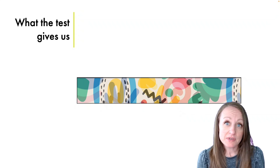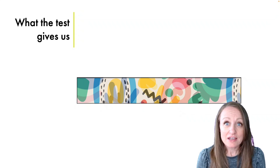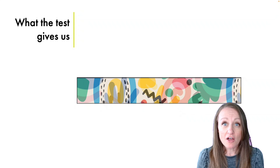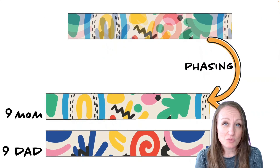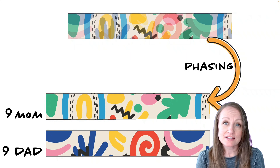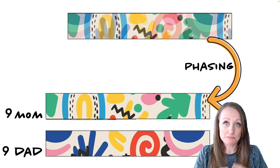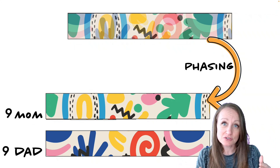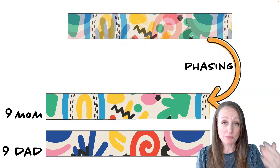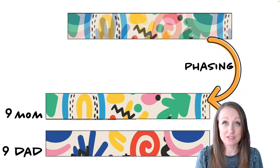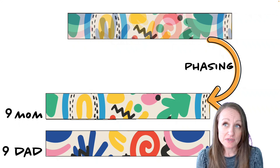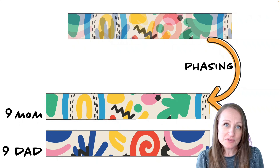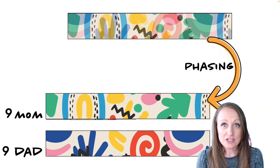Now this is a problem that's already been solved, actually. It's been solved in a way we call phasing. Phasing is the word we use to describe this separation of your DNA test results into the chromosome you received from your mom and the chromosome you received from your dad. This technology is not new — most of our companies are already using this kind of phasing technology to help analyze your DNA test results.